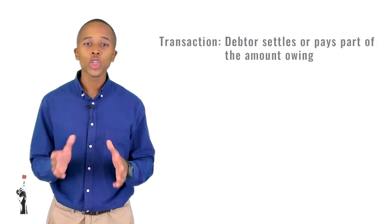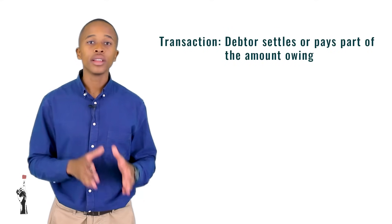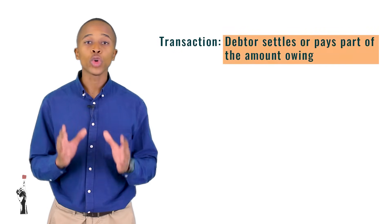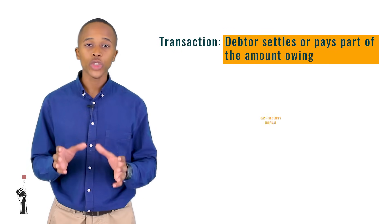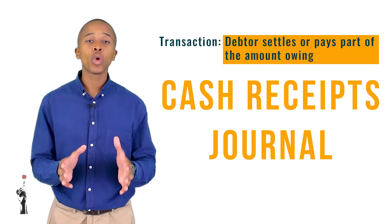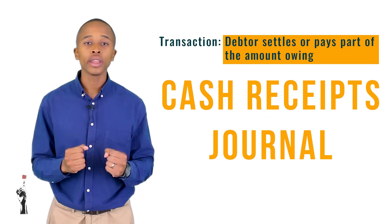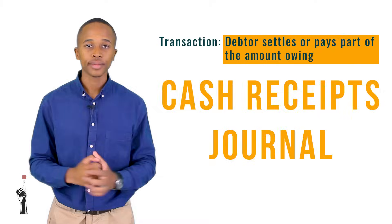When the debtor pays off his or her credit, the transaction is recorded on the cash receipts journal. This is because the business receives the money from the debtor.